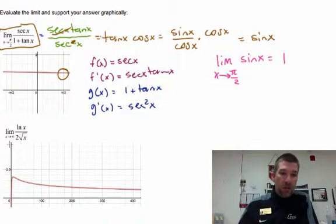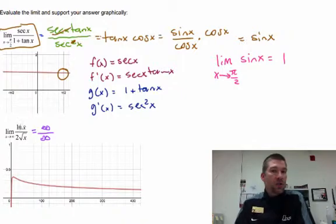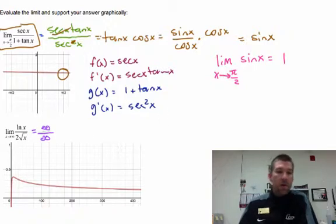Now we've got the limit as x approaches infinity of natural log x over 2 square root of x. Well, what's going on in this guy is if you plug in infinity in, you get infinity over infinity. The natural log of a large number is a large number. The natural log of a square root is a large number. And if they keep getting bigger, those keep getting bigger. So let's break them up.